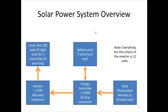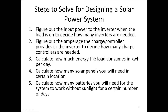So that's the overview of the system. Now, how do we choose how many of these components we need? We want to go through all the steps to design a solar power system. Step one: figure out how many inverters we need. Step two: how many charge controllers. Then we calculate how much energy the load uses per day, so we can calculate in steps four and five how many solar panels and batteries we'll need.